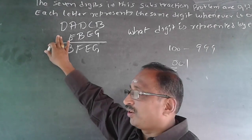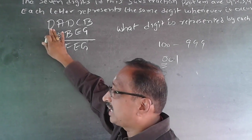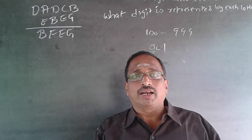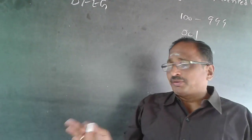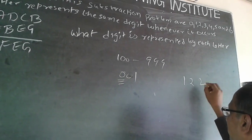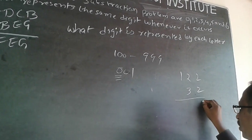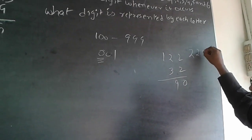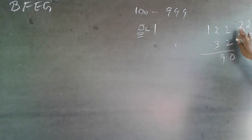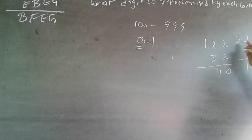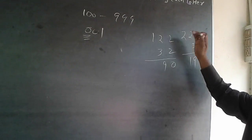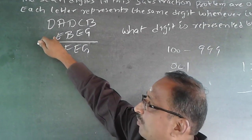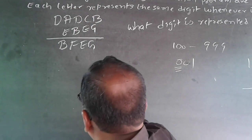Because this D is vanishing — whatever it has, it has lent. The maximum lending can only be 1. For example, take 122 minus 32: the 2s cancel to 0, then borrowing makes that digit 9. Even with 222 minus 32, I can lend only 1, giving 190. Because the maximum lending is only 1, D can only be 1. Wherever I have got D, it will be only 1.